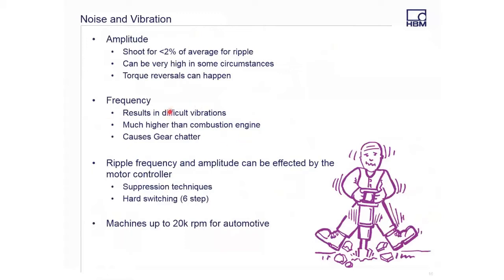The next thing we care about is frequency for the vibration. As we saw in the previous example, 36 ripples per electrical cycle — if we start going to very high cycles, that could be a very high ripple. The frequency is going to be much higher than its combustion engine counterpart. From everything I've heard from people who work in the NVH and gearbox world, this can start to cause gear chatter where the gears are banging against one another, and that can really degrade the lifetime of a gearbox.